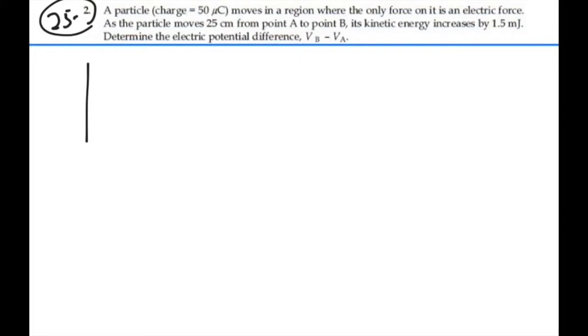Alright, so we have a charge, it's a positive charge, value of 50 microcoulombs, and it's going to start from point A and travel to point B. The distance between those two points is given as 25 centimeters, 0.25 meters.